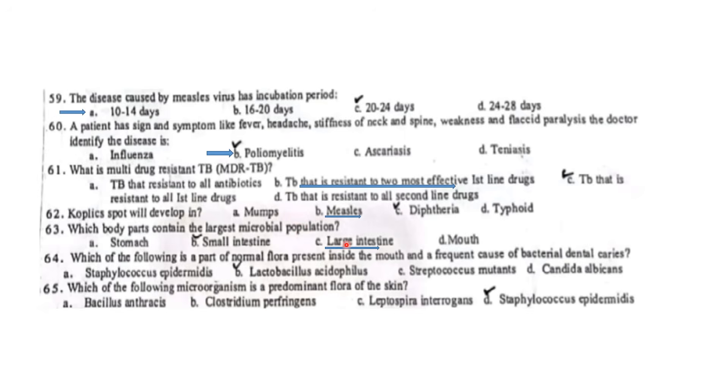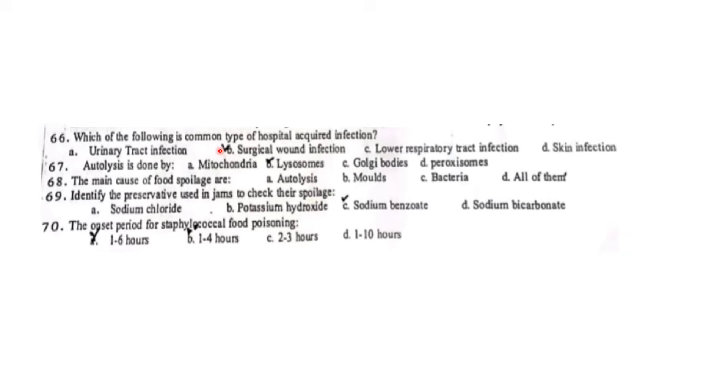Which body part contains the largest microbial population? Large intestine contains the largest microbial population. Which of the following is part of normal flora present inside the mouth and a frequent cause of bacterial dental caries? Streptococcus mutans. Which microorganism is the predominant flora of the skin? Staphylococcus epidermidis. Which is a common type of hospital acquired infection? UTI is a common type. Autolysis is done by lysosomes. The main cause of food spoilage includes all of these. Identify the preservative used to check spoilage: sodium benzoate. The onset period for staphylococcal food spoilage is one to six hours.